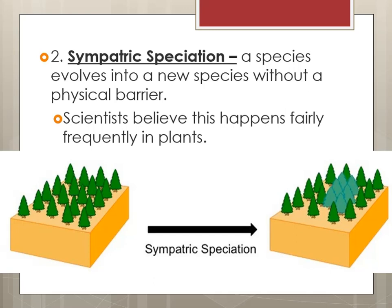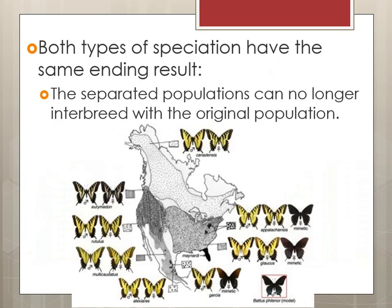The other type is sympatric speciation, where a species evolves into a new species without a physical barrier. This is fairly common in plants. Not so much in animals, unless there was some kind of random mutation that changed it instantly, but the likelihood of that happening is slim. Both types of speciation have the same ending result: the separated populations can no longer interbreed.